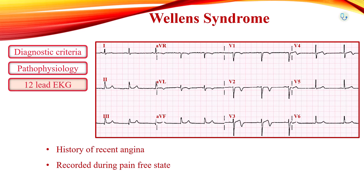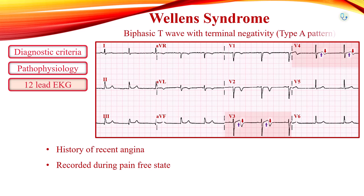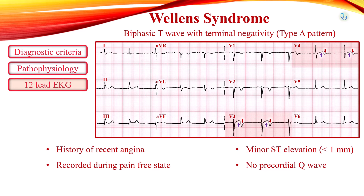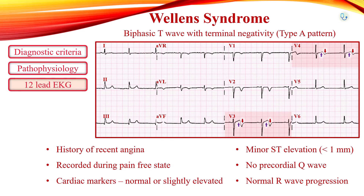Leads V3 and V4 show biphasic precordial T-waves with terminal negativity. There is minor ST-segment elevation and no precordial Q-wave. R-wave progression is normal. It should be noted that cardiac markers are normal or may be slightly elevated in Wellens syndrome.